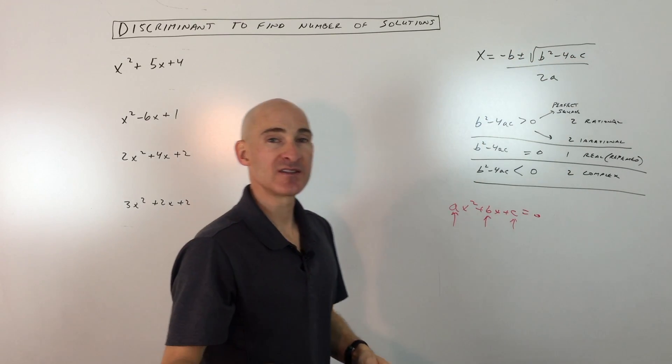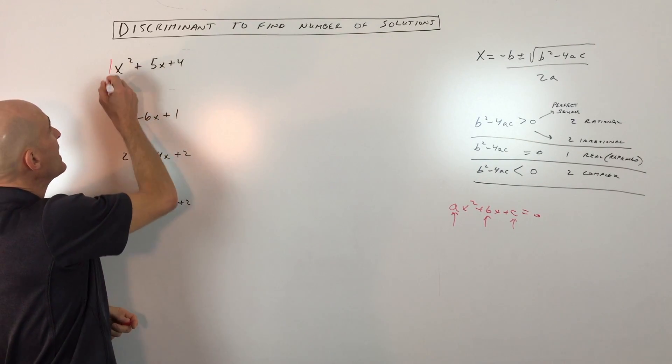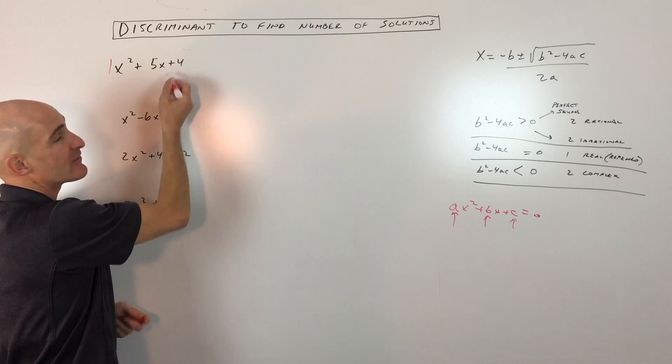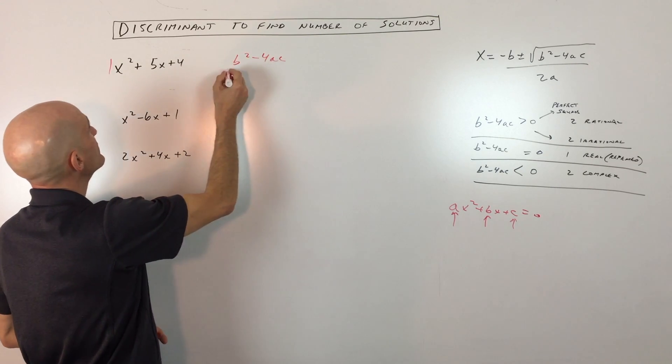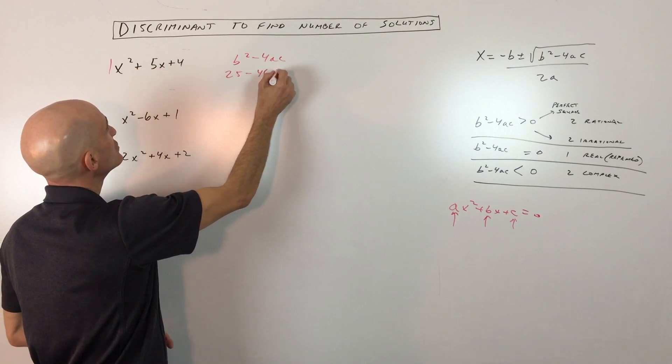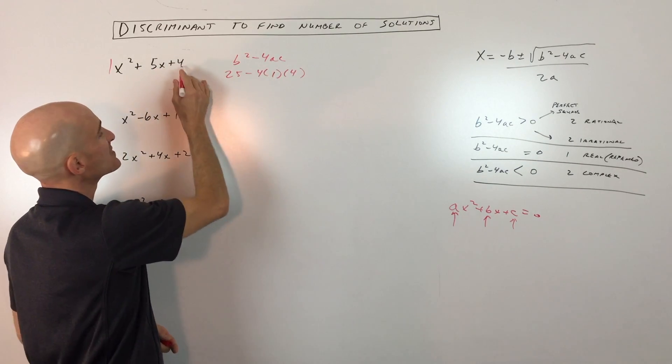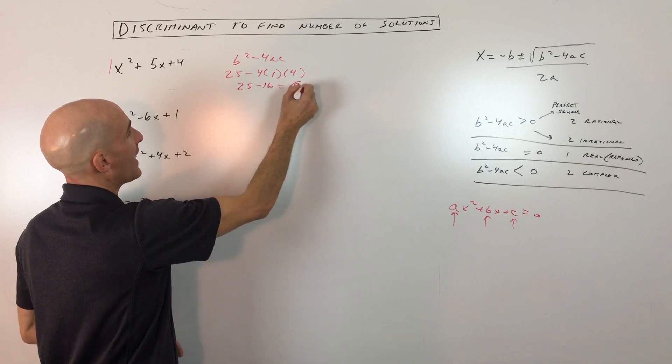So let's get right into these examples. In this example, you can see that a is 1, b is positive 5, and c is 4. So if we do our b squared minus 4ac, what do we get? b squared is 5 squared, which is 25, minus 4 times a, which is 1, times 4, which is the c value. So this comes out to 25 minus 16, which equals 9.